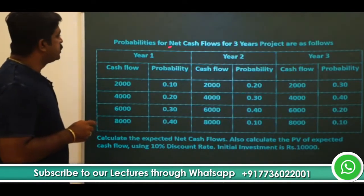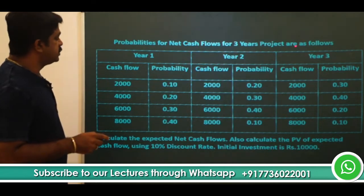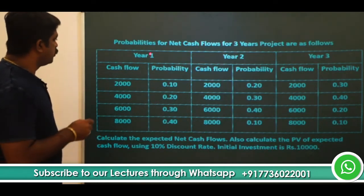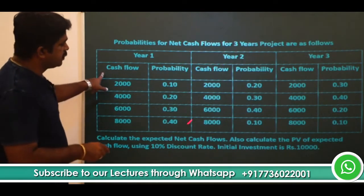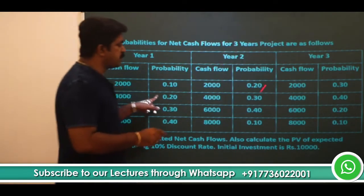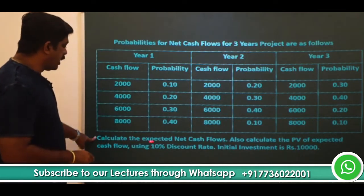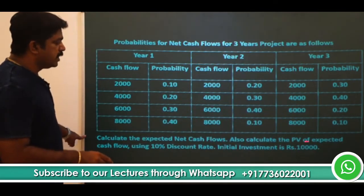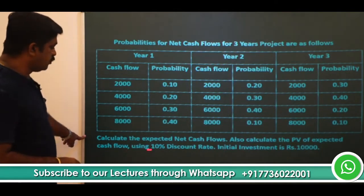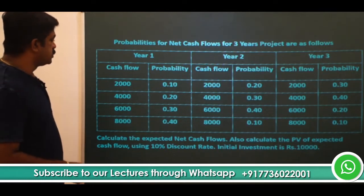Here you have the probabilities for net cash flows for a 3-year project. For year 1, year 2, and year 3, the cash flows and the respective probabilities are available. You are expected to calculate the expected net cash flows, the present value of expected cash flows using a 10% discount rate, and the initial investment is rupees 10,000.